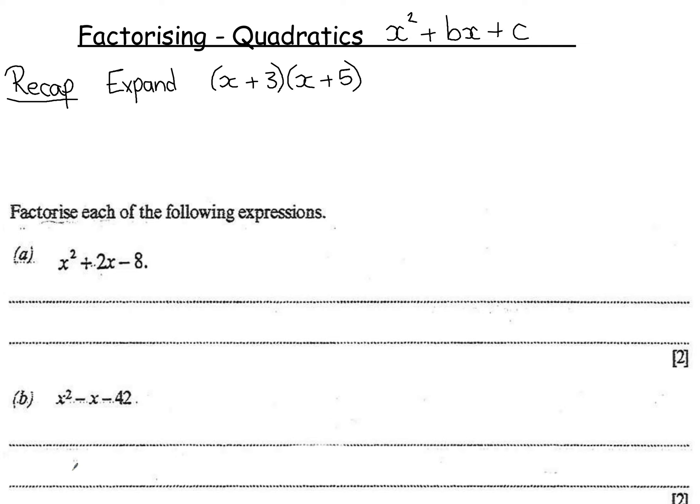We're going to look at factorising quadratics such as x² + bx + c. I've noticed that the coefficient of x², that's the number in front of x², is 1. So in front of this x² is the number 1.